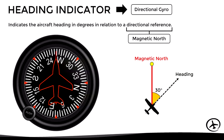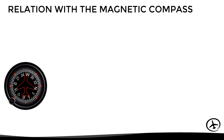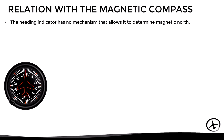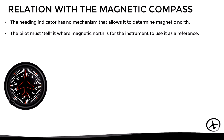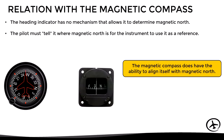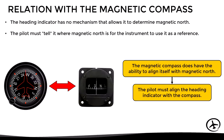However, there is a problem: the heading indicator has no mechanism that allows it to determine the direction of magnetic north. Therefore, the pilot must tell it where magnetic north is for the instrument to use it as a reference. To do this, the pilot uses the magnetic compass, since it does have the ability to align itself with magnetic north. The pilot must then align the heading indicator using the magnetic compass indication.